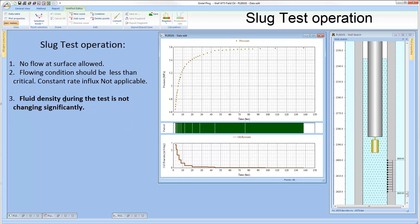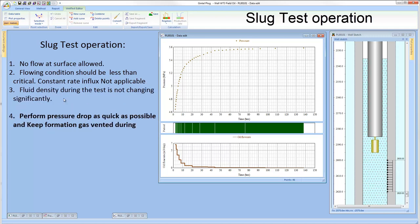The next, fluid density during the test implementation should not be changing significantly, otherwise you will get significant errors in your results. And the last, perform pressure drop as quick as possible and keep formation gas vented during the test.